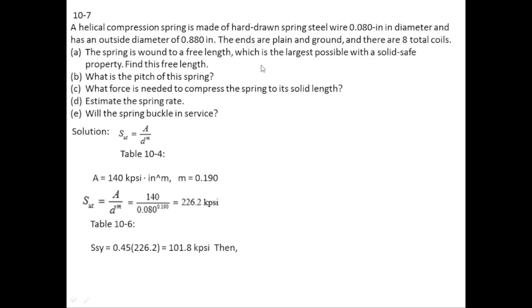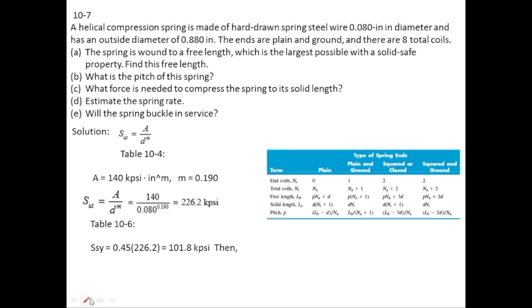From table 10.1, NT equals NA plus 1, free length equals P times NA plus 1, and pitch equals L0 divided by NA. So NT equals NA plus 1, rearranging for NA gives NT minus 1. Since NT is 8, NA equals 7.